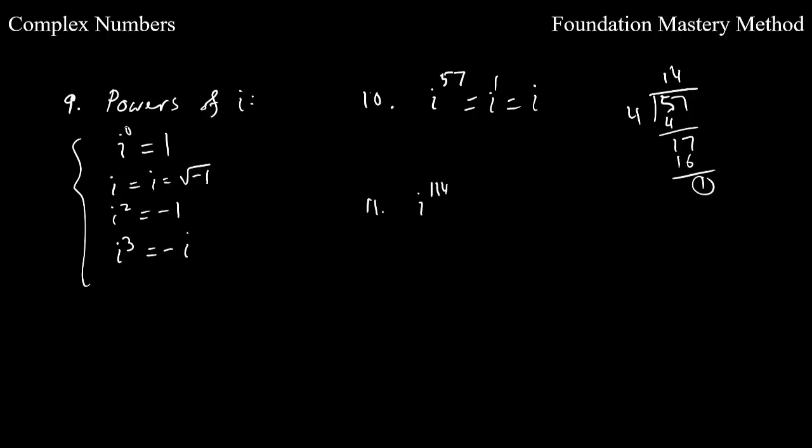Now let us see what happens when I have exponent 114 on i. So we'll be doing the same thing. Divide 114 by 4. So we'll go 2 times, and you can go 8 times. You have a remainder is 2. Then this one is same as i squared, which is negative 1. And we are done for this exponent.